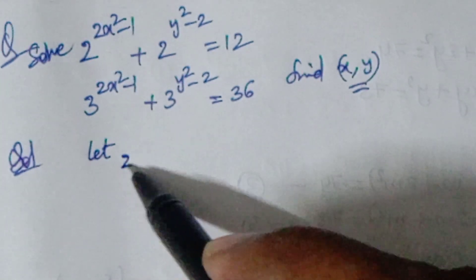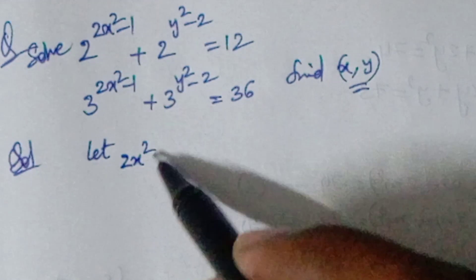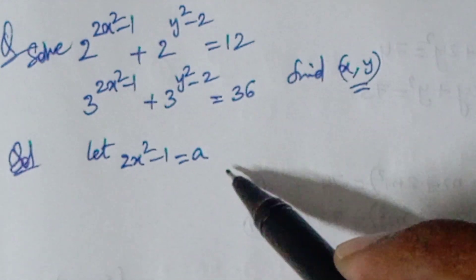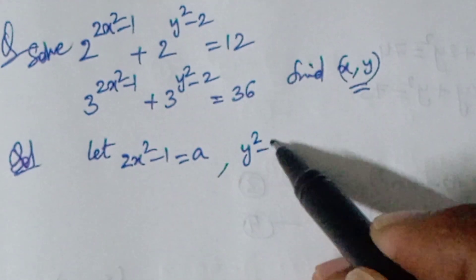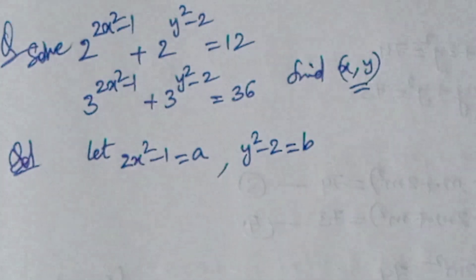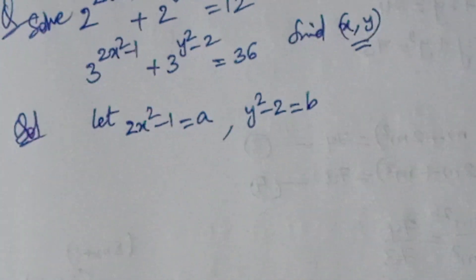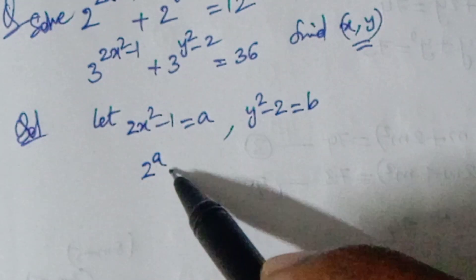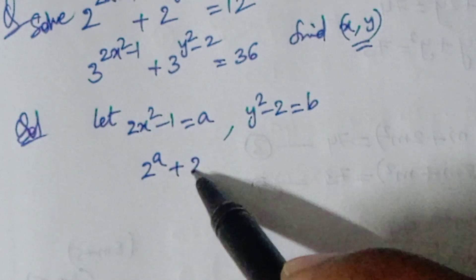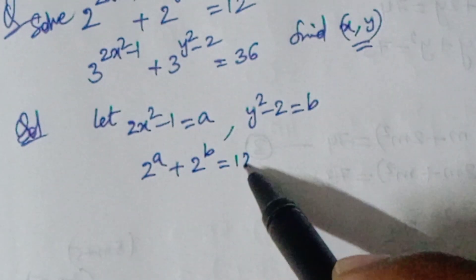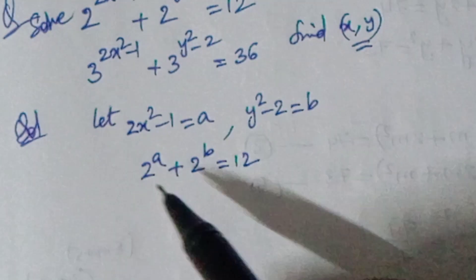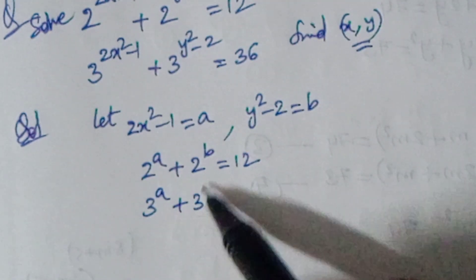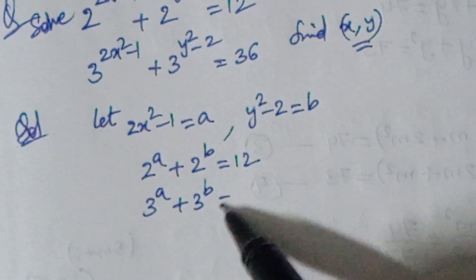Let us take 2x² - 1 equal to a, and y² - 2 equal to b. So now the equations become: 2 to the power of a plus 2 to the power of b equals 12, and 3 to the power of a plus 3 to the power of b equals 36.